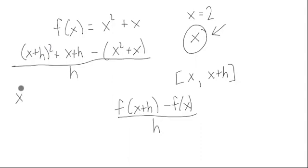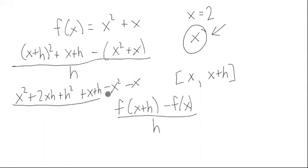If you simplify, x squared plus 2xh plus h squared plus x plus h minus x squared minus x, all over h. Notice the x squareds cancel, the x's cancel. Then we can divide h into each of these parts, and we end up getting 2x plus h plus 1.